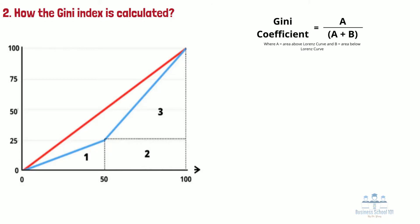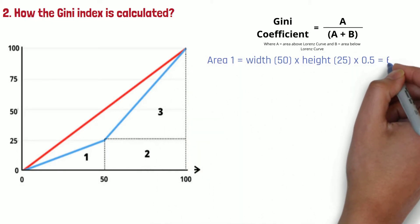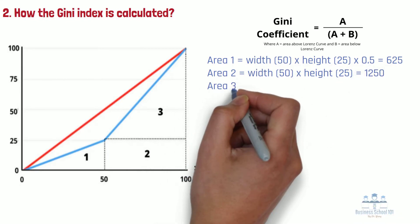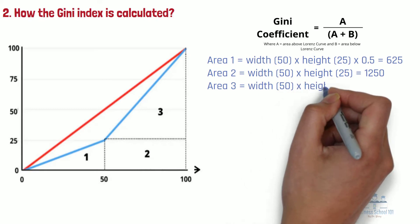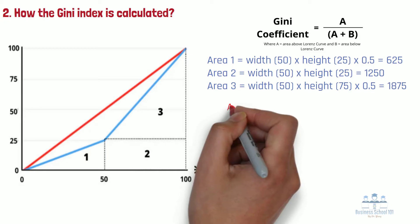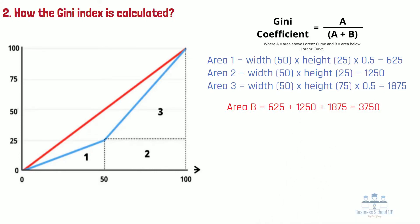Let us take a simple example. We can create three segments: Area 1 equals 50 times 25 times 0.5, which equals 625. Area 2 equals 50 times 25, which equals 1250. Area 3 equals 50 times 75 times 0.5, which equals 1875. So the total area of B equals 625 plus 1250 plus 1875, which equals 3750.